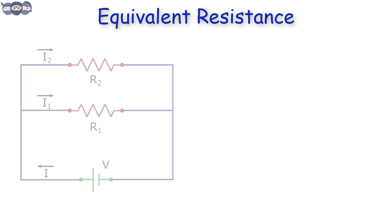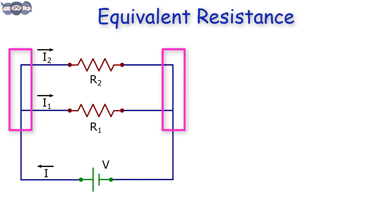Now, consider the circuit shown in the figure. Here, the resistances are connected on both the ends. This type of connection is called a parallel combination.